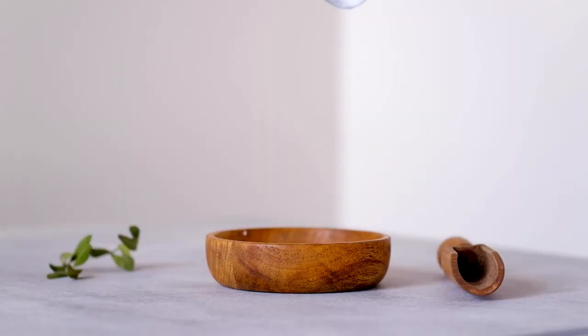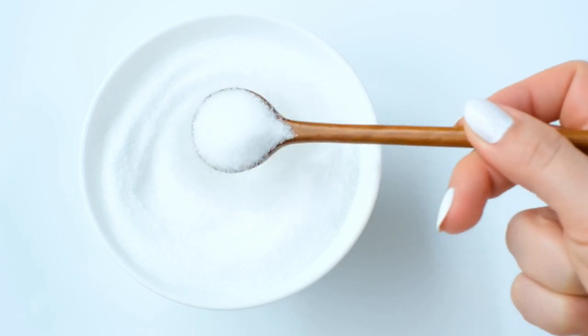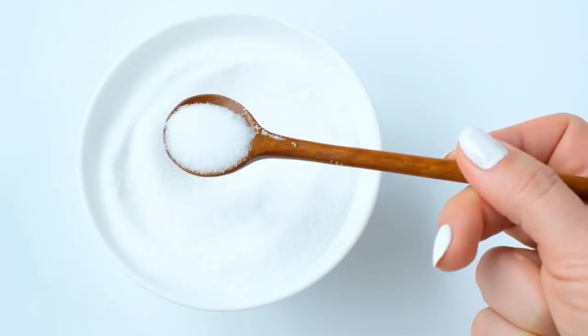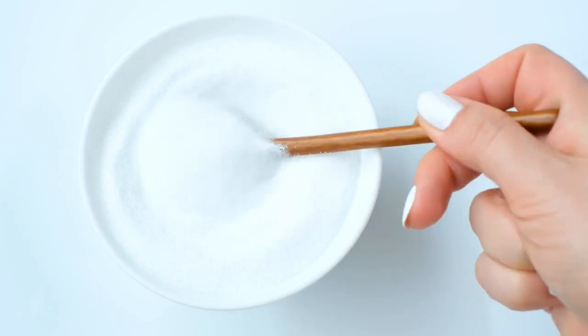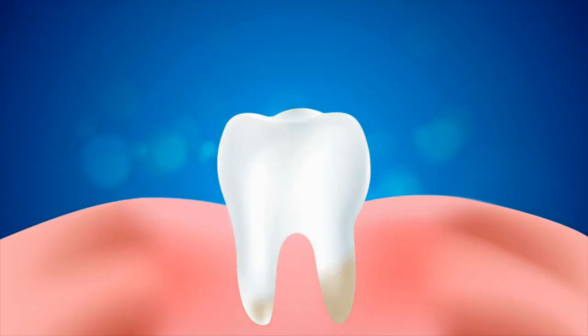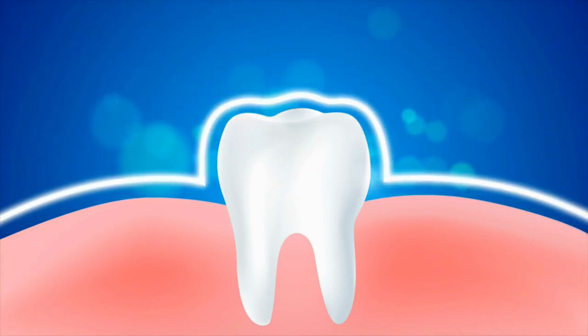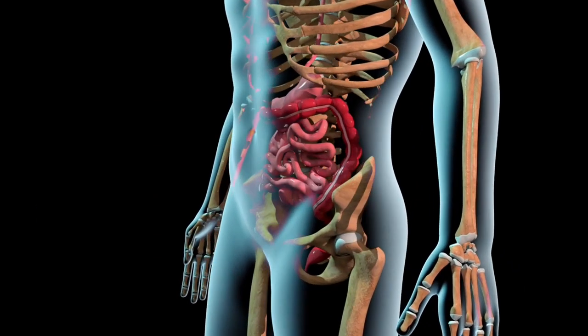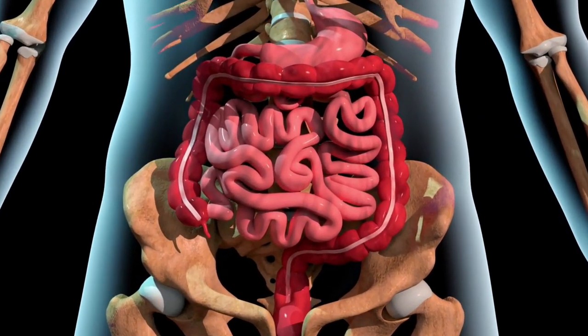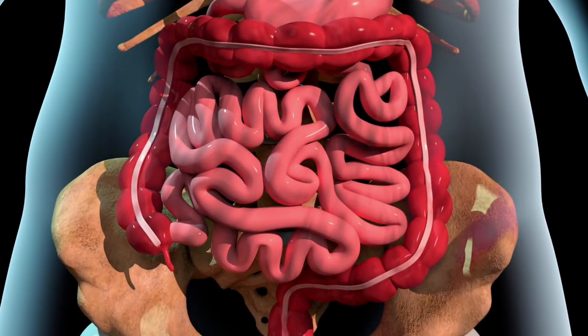Next on our list is erythritol. Erythritol is a sugar alcohol that contains about 6% of sugar calories, but 70% of the sweetness. Unlike sugar, erythritol does not contribute to tooth decay and may even inhibit the growth of oral bacteria. Erythritol is generally well-tolerated and does not cause the digestive distress associated with other sugar alcohols.